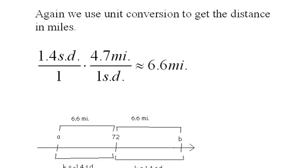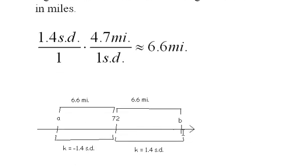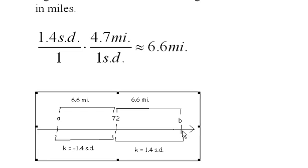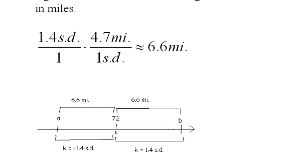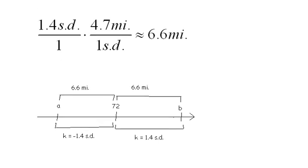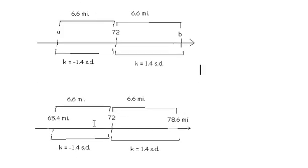And that changes the picture again. There we have it. This distance is 1.4 standard deviations, 6.6 miles, the same this way. So I just add the 6.6 to 72 to find this number, and then subtract 6.6 from 72 to get that number. When I do that I get an interval of 65.4 miles to 78.6 miles.